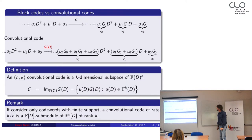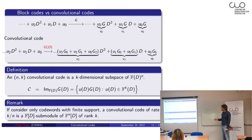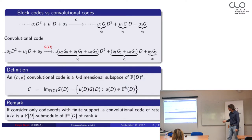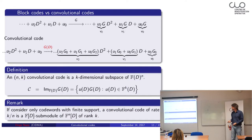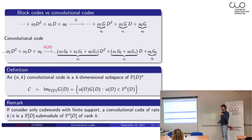Mathematically, if we consider rational functions, a convolutional code is a vector subspace of F(D)ⁿ. If we consider polynomials instead — which form a ring, not a field — we get a module over the polynomial ring rather than a subspace, which changes the approach significantly. Either way, we know the mathematical object we want to study: we want this object to have large distance so we can correct as many errors as possible.